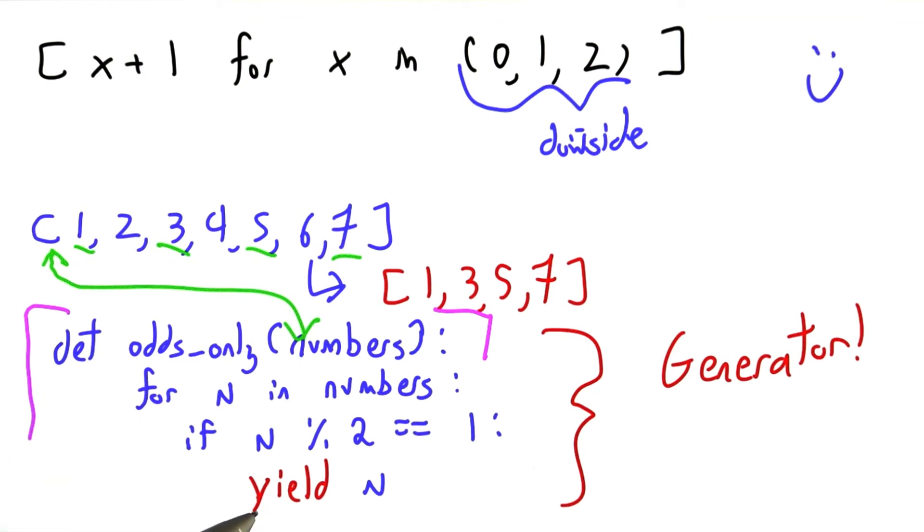A function like odds_only that uses yield to potentially return multiple answers is called a generator because you can use it to generate another list or another enumeration.